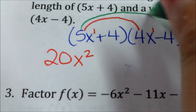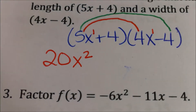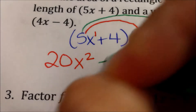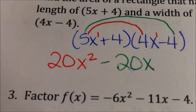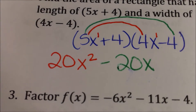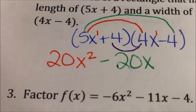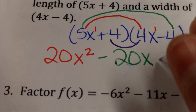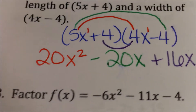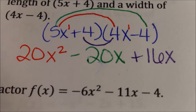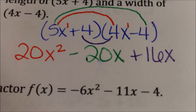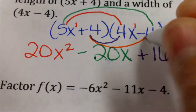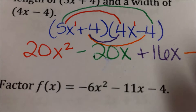So it's the outside term times the outside term. 5x times negative 4 is negative 20x. Then we multiply the inner terms: 4 times positive 4x. Those are the inner for the I. 4 times 4x is 16x. Then we multiply the last times the last. The last term of this one is the 4 times the negative 4, which is negative 16.